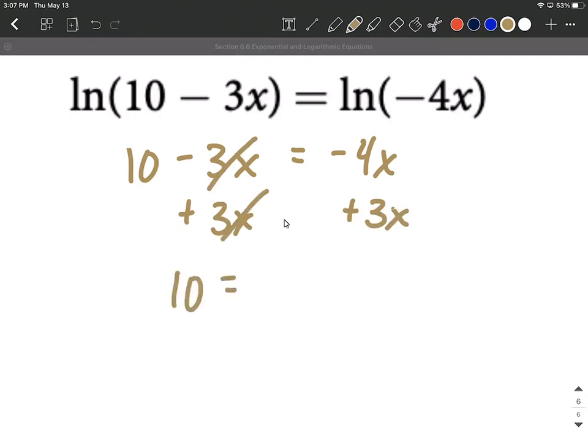So we have 10 equals negative 1x, and to get rid of that negative we can either multiply or divide both sides by negative 1. On this one I'm electing to multiply both sides by negative 1, but we're going to get x equals negative 10 as a solution. That's a good solution. I've double checked it by plugging it back into each one of these. Overall what's inside here you're going to end up with a positive value, of course we can only plug positive values into logarithms, so good solution.